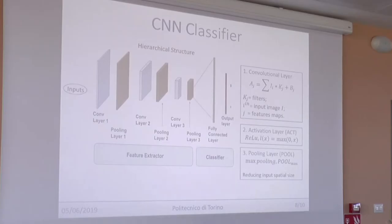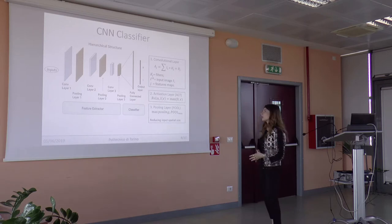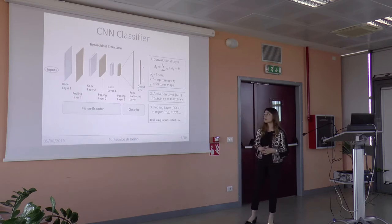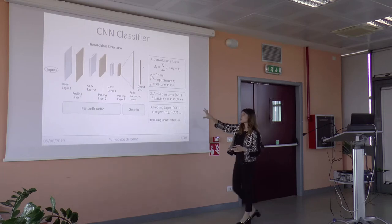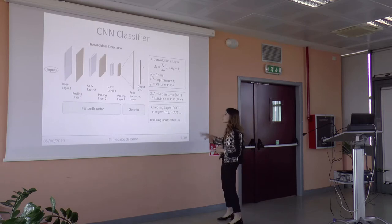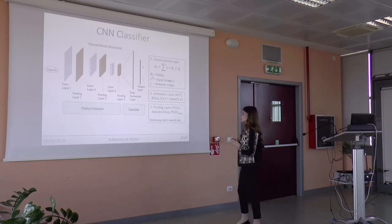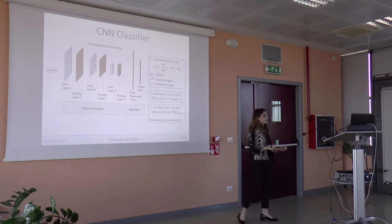The third section of the framework is the convolutional neural network classifier. The convolutional neural network is a deep learning approach which extracts the most relevant features from the inputs using a hierarchical structure. There are three main parts: the convolutional layer, based on a formula where K are filters, I is the input image, and J are the feature maps; the activation layer, characterized by the rectified linear units (ReLU) function; and the pooling layer, which reduces the input spatial size by evaluating the maximum value of a sub-matrix selected by the filter.